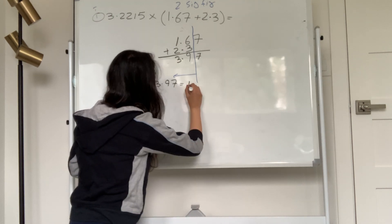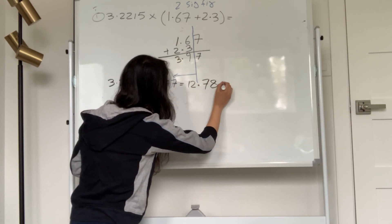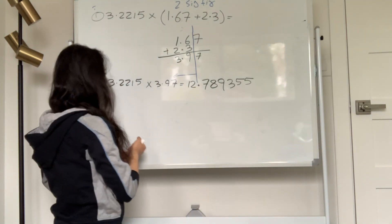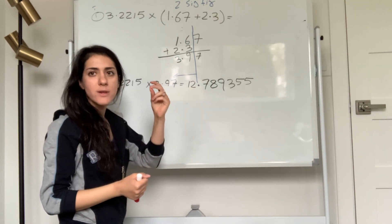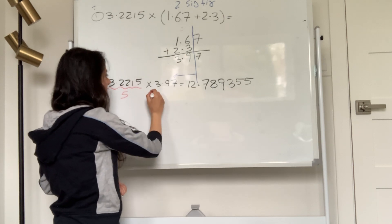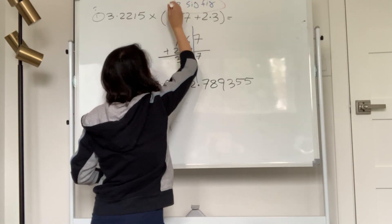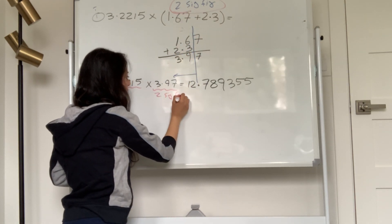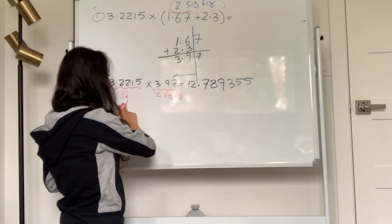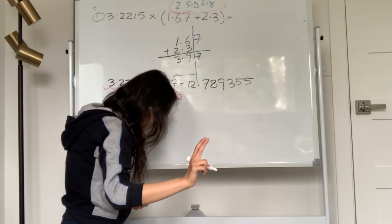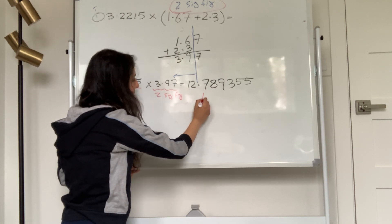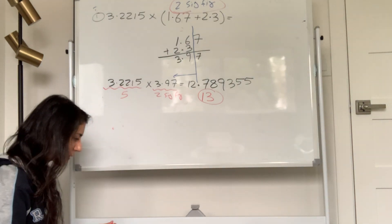So now I multiply 3.2215 by 3.97. My calculator gives me 12.789355. Now we round. This is multiplication, so I go with the lowest number of significant figures. 3.2215 has 5 sig figs. The 3.97 is only supposed to have 2 sig figs — I kept all the digits but didn't round early. So my final answer needs 2 sig figs. 12.7 rounds up to 13.